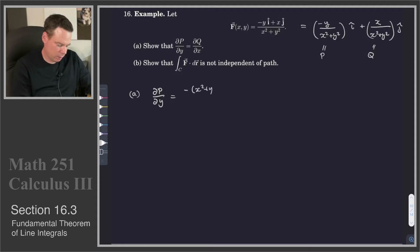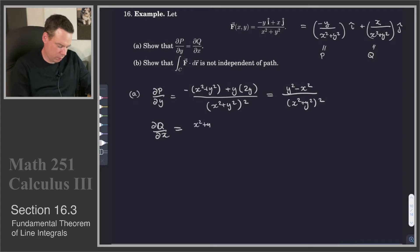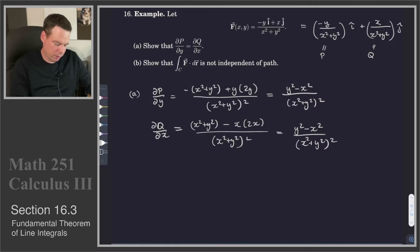That works out to: we've got -x² and then -y² plus 2y², so that becomes (y²-x²)/(x²+y²)². We also want to find ∂Q/∂x: derivative of the top times the bottom — x²+y² — minus the top times the derivative of the bottom, all over the bottom squared. That gives (y²-x²)/(x²+y²)². These are equal, which is what we wanted to verify.